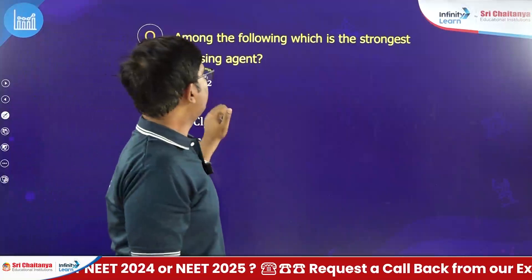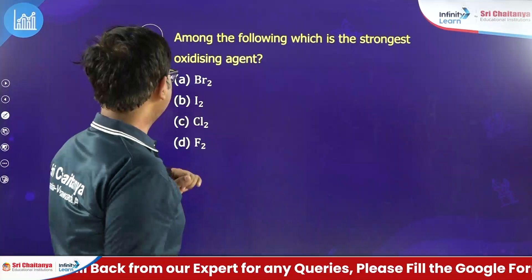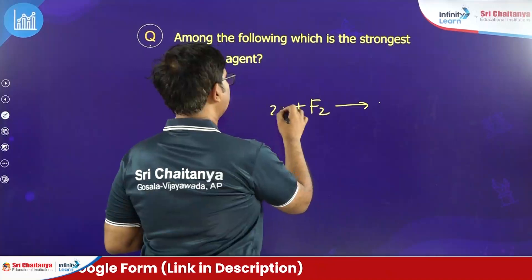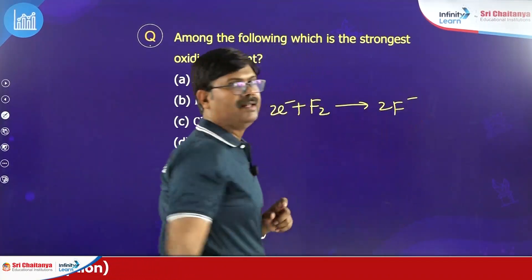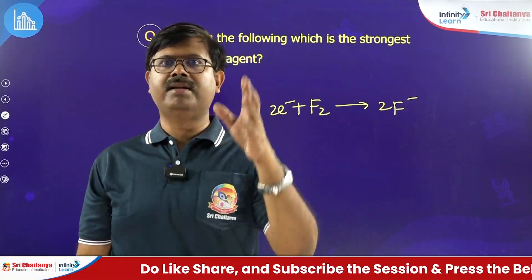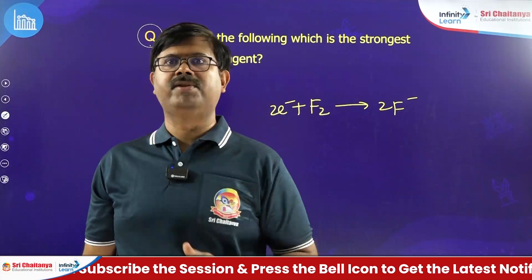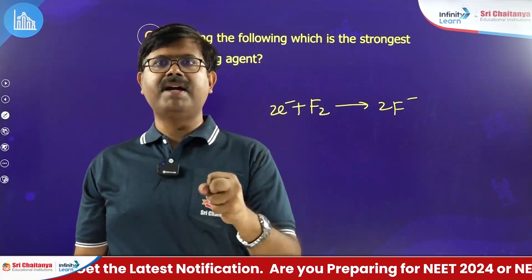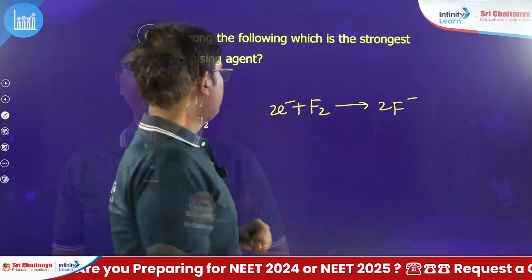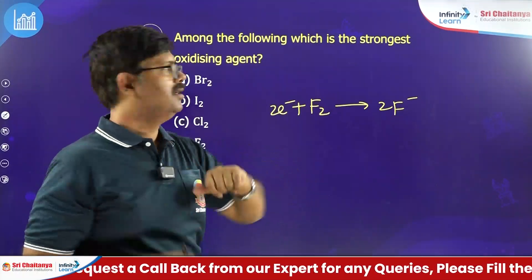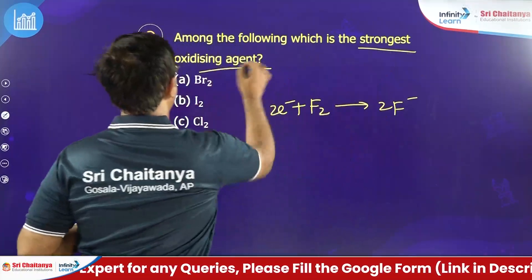Among the following, which is the strongest oxidizing agent? Looking at fluorine: F2 easily converts to F-. Its reduction potential value is very high — in the electrochemistry reduction potential tables, F2 occupies almost the highest place. So its capacity to undergo reduction is very high, meaning it easily oxidizes others and acts as a good oxidizing agent. Therefore the strongest oxidizing agent is fluorine.